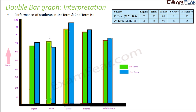Now let us see how we interpret a double bar graph. This double bar graph shows the performance of students in their first term and second term examinations. The maximum marks for each subject is 100. It shows marks for English, Hindi, Math, Science, and Social Science. The green bars represent the first term and the blue bars represent the second term.